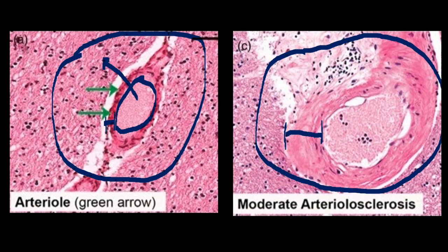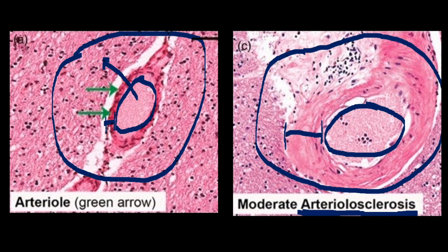This is a pathology called brain arteriolar sclerosis — a thickening of the blood vessel wall. This is an abnormal pathology caused by high blood pressure and diabetes. Because of this pathology, nutrients and oxygen have a more difficult time diffusing across the blood vessel wall because it's very thick, and therefore the surrounding tissue will not have adequate nutrients and oxygen for survival.